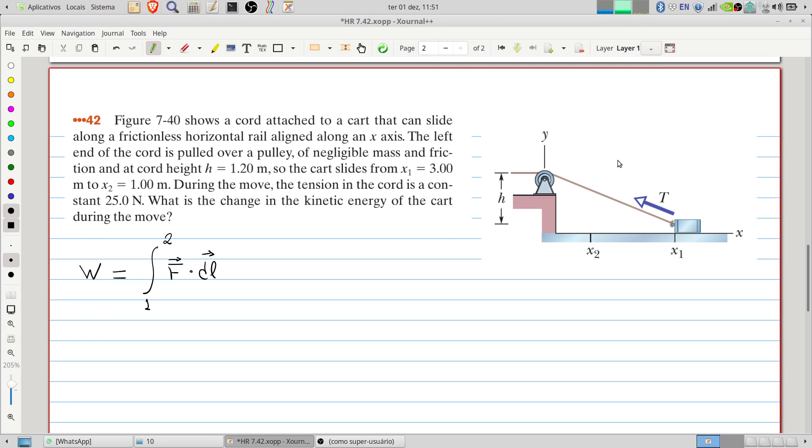Let's look at the figure. Here we have a tension in the cord that's pulling the cart. Of course we also have the weight of the cart and the normal force, but these will not interfere in the movement and we're not considering friction. What's important here is the tension pulling the cart.